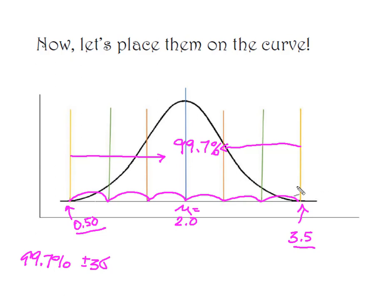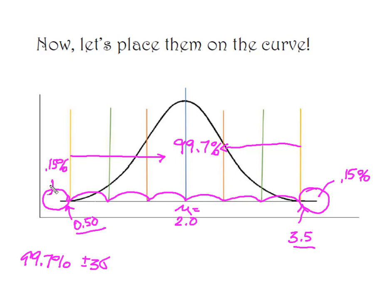That little 0.3% that we had left over — half of it is here on the right and half of it is here on the left. So that becomes 0.15% and 0.15%. Remember, because this curve is symmetrical, what happens on the right happens on the left. So only 0.15% of the time will hummingbirds drink less than half an ounce, and only 0.15% of the time will they drink more than 3.5 ounces.